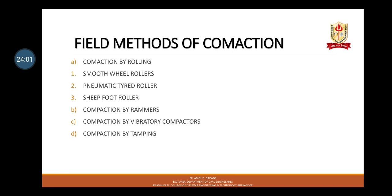The third type is the sheepsfoot roller. This roller consists of a hollow drum with a large number of small projections known as feet on its surface. These projections penetrate into the soil layers during rolling and cause compaction. The drums are mounted on a steel frame and can be filled with water or ballast to increase the mass. Sheepsfoot rollers are available both as self-propelled and towed units with 2.5 to 13 tonne weight. They are suitable only for fine-grained cohesive soils such as silty clay and clay, and are best suited for compaction of the impervious zone of earthen dams. They are suitable for compacting lower layers of soil but do not provide a proper finish to the upper surface.